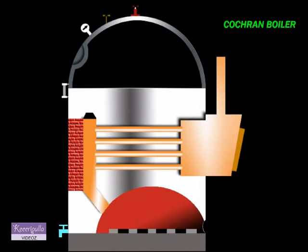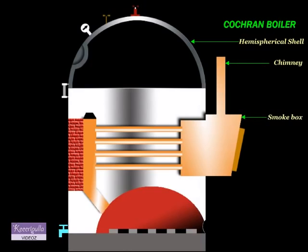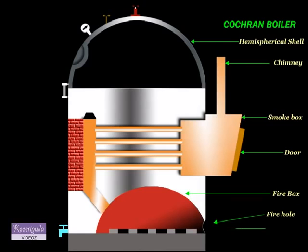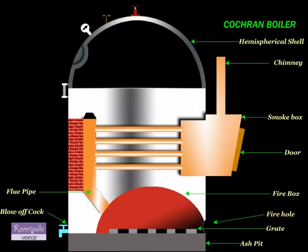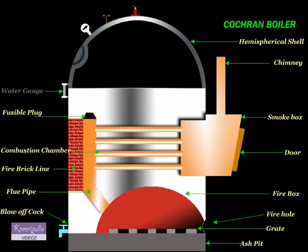The figure shows a Cochran boiler. The various parts of the boiler are: hemispherical shell, chimney, smoke box, door, fire box, fire hole, grate, ash pit, blow-off cock, flue pipe, fire brick lining, combustion chamber, fusible plug, water gauge, manhole, pressure gauge, safety valve, and a steam stop valve.